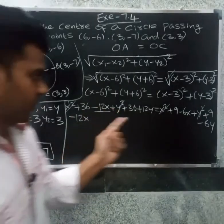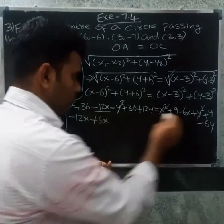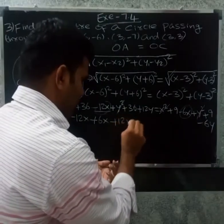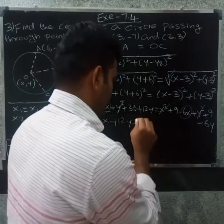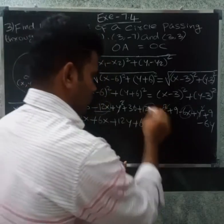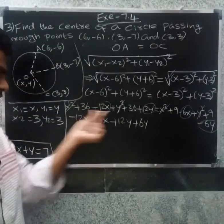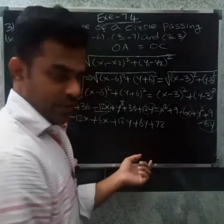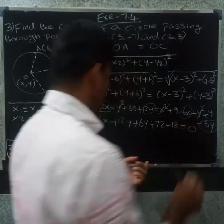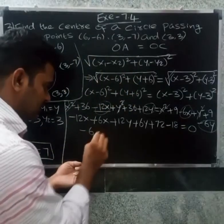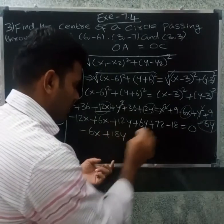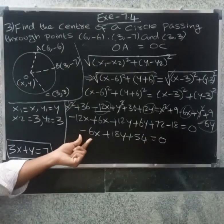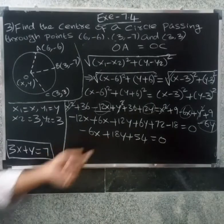After canceling x square and y square, the x terms give minus 12x plus 6x equals minus 6x. The y terms give plus 12y plus 6y equals plus 18y. Constants: 36 plus 36 is 72 on the left; 9 plus 9 is 18 on the right. So minus 6x plus 18y plus 72 minus 18 equals 0, giving minus 6x plus 18y plus 54 equal to 0.